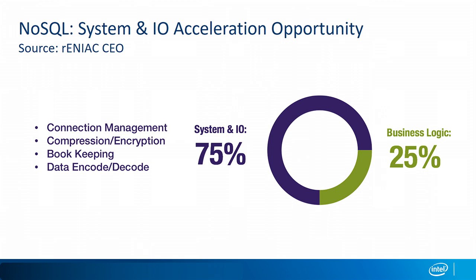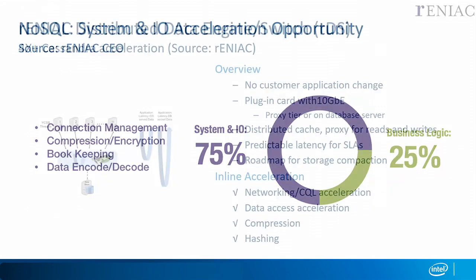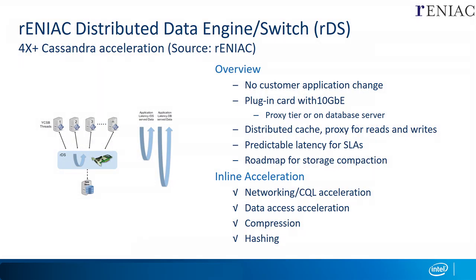You can imagine that if in a workload like Cassandra, 75% of the CPU cycles are doing these types of system and I/O tasks, well, if you can offload that, you could get a 4X acceleration. This is exactly what this partner is showing — for instance, on a Cassandra stress test, 4X acceleration. On the CQL reads for Cassandra, they're handled completely by this programmable accelerator.